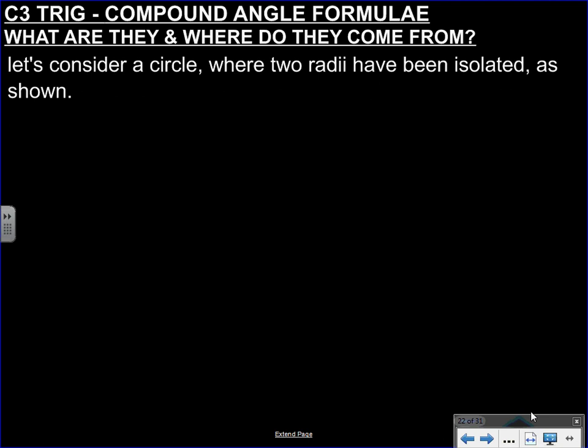So we've got a C3 Trig video on compound angle formulas. By this time you would have had quite a lot of formulas thrown at you. We know what sec is, cosec, cot, we know that cosec squared is the same as 1 plus cot squared, and sec squared is the same as 1 plus tan squared. Now we're going to extend this into what's the most useful formula in the entire C3 Trig course - the compound angle formula, also known as the addition rule formula.